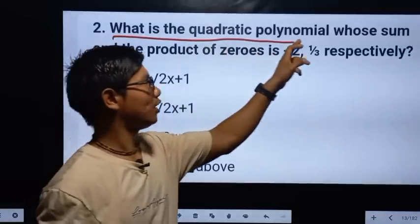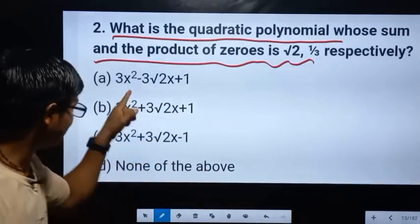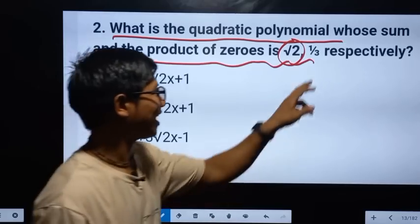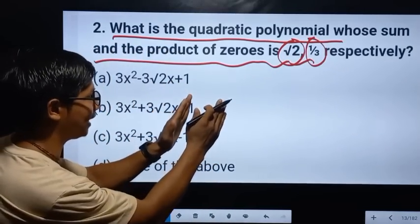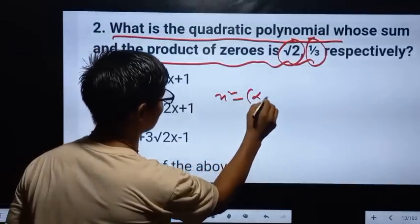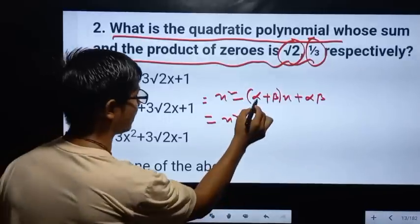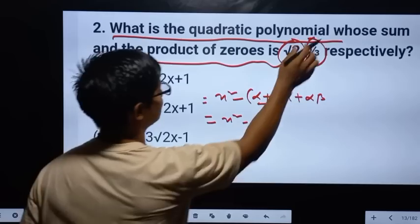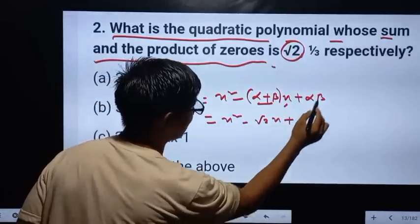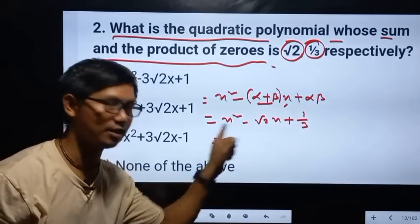What is the quadratic polynomial whose sum and product of zeros is root 2 and 1 by 3? Your values are: sum is under root 2, product is 1 by 3. The formula is x squared minus (alpha plus beta) x plus alpha beta. So sum is under root 2 and product is 1 by 3. This is our answer.